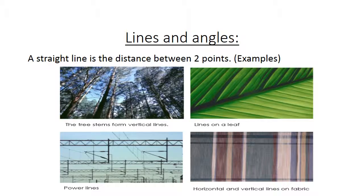Lines and angles. A straight line is the distance between 2 points. Tree stems form vertical lines, lines on a leaf, power lines. Horizontal and vertical lines on fabric.